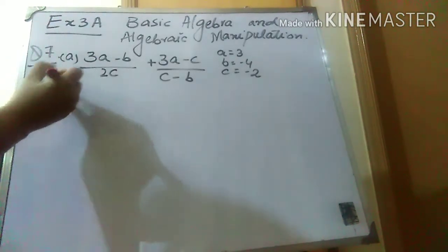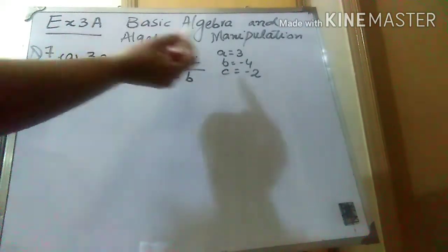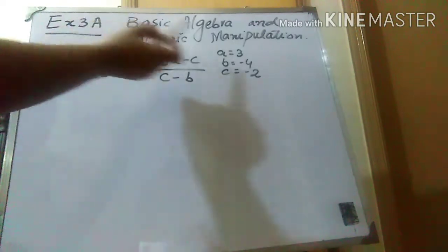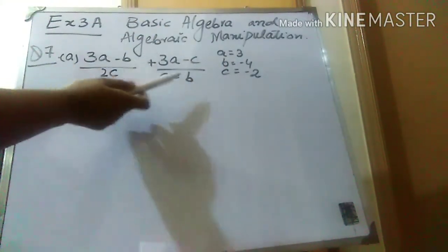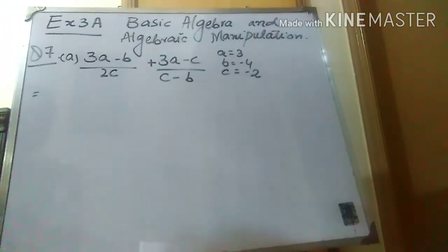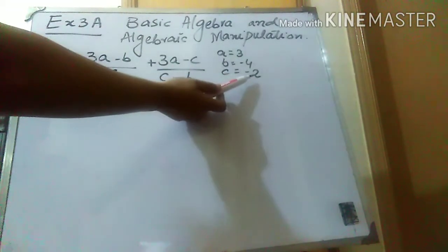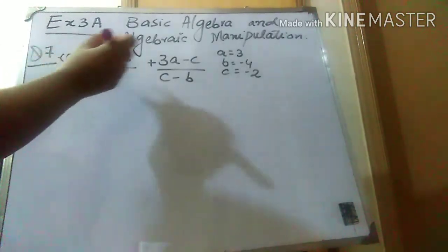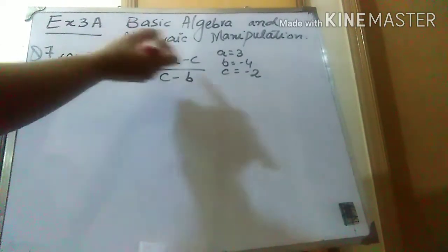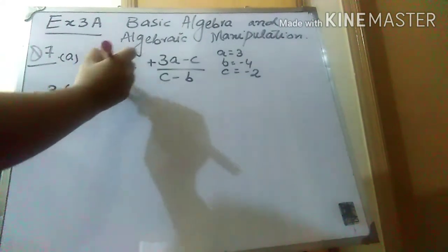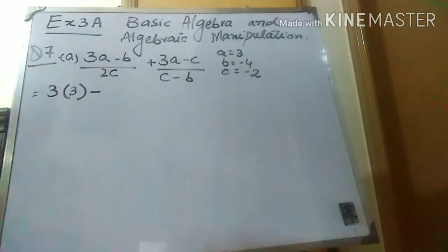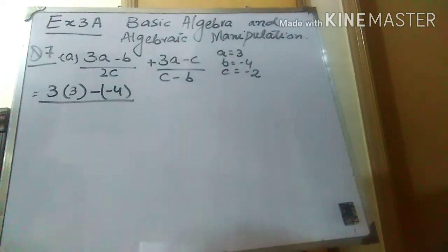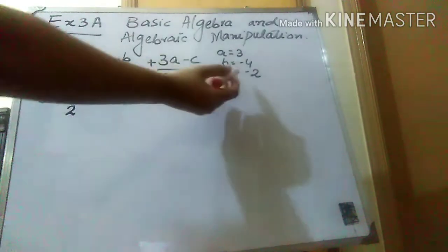Wherever you see a, put its value which is 3. Wherever you see b, put its value which is minus 4. Wherever you see c, put its value which is minus 2. So for the first part: 3 times 3, minus (minus 4), over 2 times (minus 2), and for the second part: 3 times 3, minus (minus 2), over (minus 2) minus (minus 4). Values in brackets because the numbers carry a minus sign.